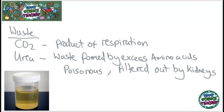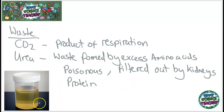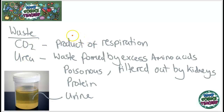Urea can build up in your body if you eat a very high protein diet, because proteins get converted into amino acids and your body can't use all of them. Amino acids can become ammonia, which is a toxic gas, so your body needs to get rid of them in the form of urea. Urea forms the waste product urine, which builds up in the bladder and is excreted. Carbon dioxide is a product of respiration and we get rid of it by breathing. It travels around the body in blood plasma — not on red blood cells — and is excreted when we breathe out.